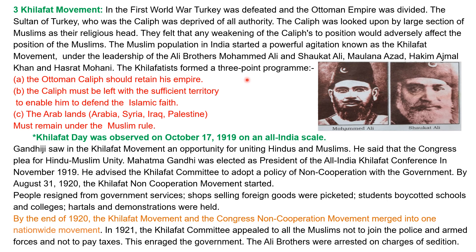Along with Muhammad Ali and Shaukat Ali, Maulana Azad, Hakim Ajmal Khan, and Hasrat Mohani also gave support. The Khilafatists formed a three-point program: number one, the Ottoman Khalif should retain his empire; number two, the Khalif must be left with sufficient territory to defend the Islamic faith; number three, Arab lands — basically Arabia, Syria, Iraq, and Palestine — must remain under Muslim rule. Khilafat Day was observed on October 17, 1919.